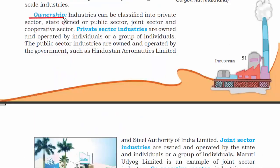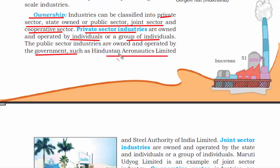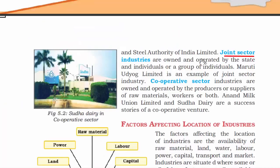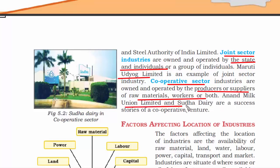The last factor is ownership. Based on ownership, industries are classified into private sector, state-owned or public sector, joint sector, or cooperative sector. Private sector industries are owned and operated by individuals or a group of individuals. Public sector industries are owned and operated by the government — all government employees come under public sector. Joint sector industries are owned and operated by the state and individual or a group of individuals. In the cooperative sector, industries are owned and operated by the producers or suppliers of raw material. For example, if you own a dairy farm, you'll produce milk products like cheese, butter, curd — and you'll supply them to the food industry. You're the producer supplying raw materials and operating the business.